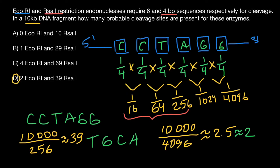So those are the two answers. Some of you may think: why shouldn't we double these numbers? Because we only considered one strand of the DNA — what about the other strand? We might also find the recognition sequence there, so should we multiply by two? The answer is no — let's take a look at why.